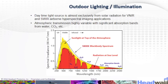Here we have outdoor lighting and illumination. Daytime light source is almost exclusively from solar radiation for VNIR and SWIR airborne hyperspectral imaging applications. The sun is essentially a black body at about 5800°C. Atmospheric transmission is highly variable with significant absorption bands from water and CO2.